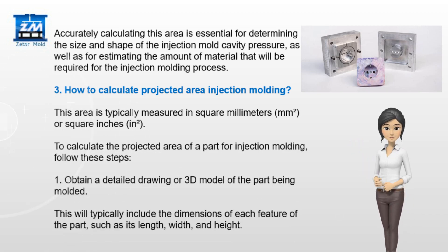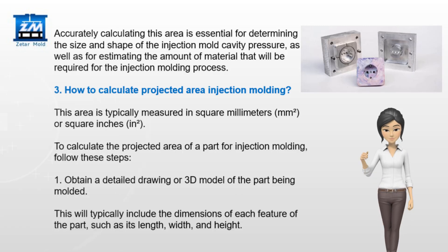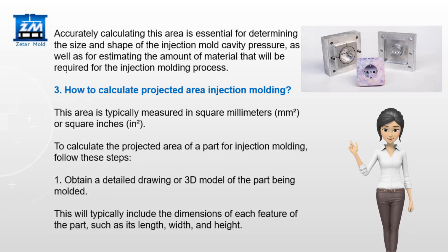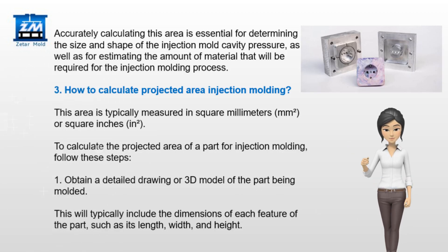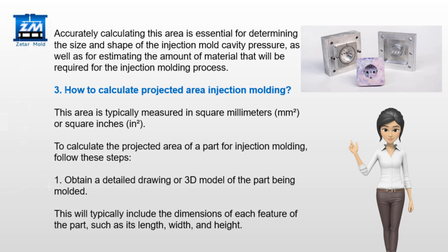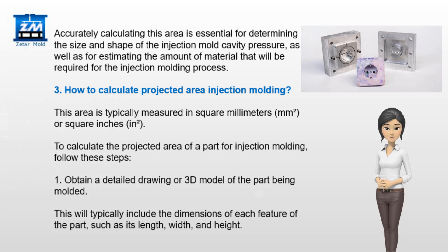How to Calculate Projected Area Injection Molding. This area is typically measured in square millimeters (mm) or square inches. To calculate the projected area of a part for injection molding, follow these steps.